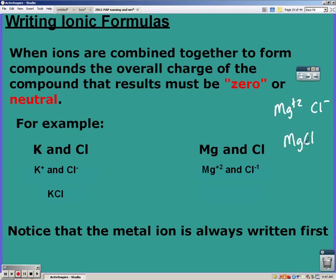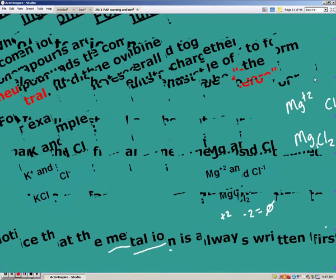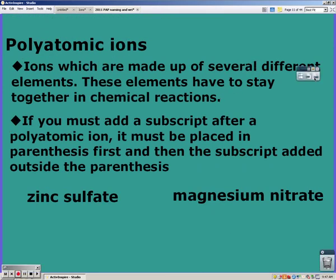Notice the 1 goes with magnesium and the 2 goes with chloride — that gives you a -2 and a +2 charge, which equals 0. The metal is always written first in an ionic compound. Polyatomic ions are ions that have several different elements that have to stay together. If you have more than one polyatomic ion, you have to put parentheses around it and then write the subscript. For zinc sulfate, zinc has a +2 charge and sulfate is SO4 with a -2 charge — the +2 and -2 cancel out, giving you just ZnSO4.